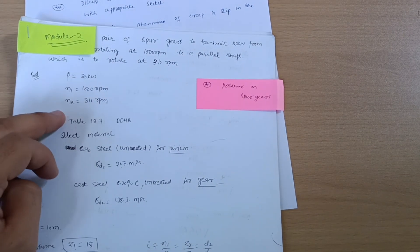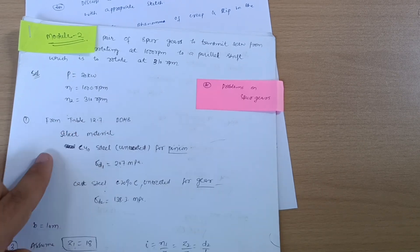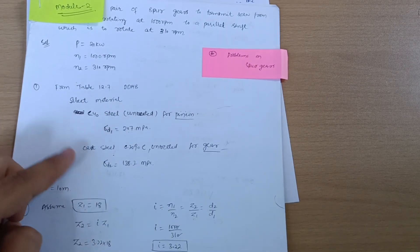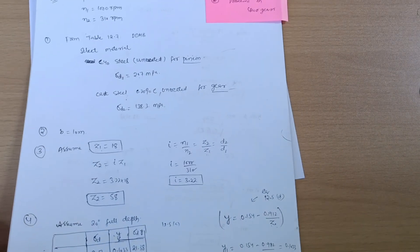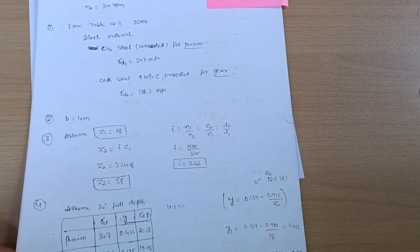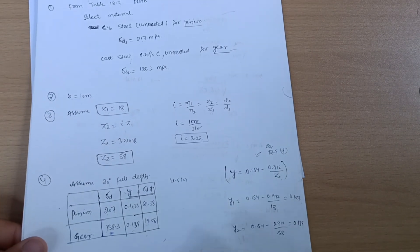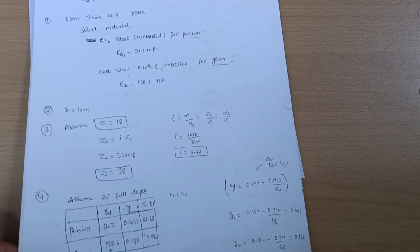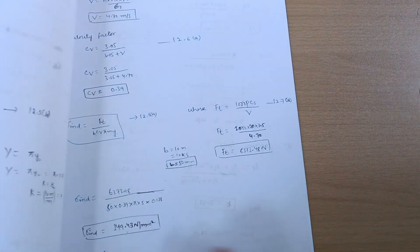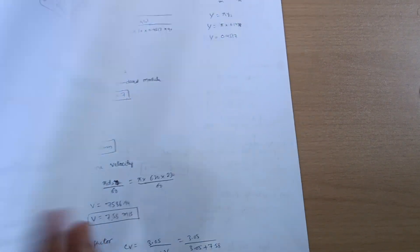This is the spur gear problems here. Write down the given values, then accordingly from your data handbook you can choose the material and take down the value. You have to accordingly go through equations and try to put down the values. You can easily understand the problems on spur gears and also helical gears.